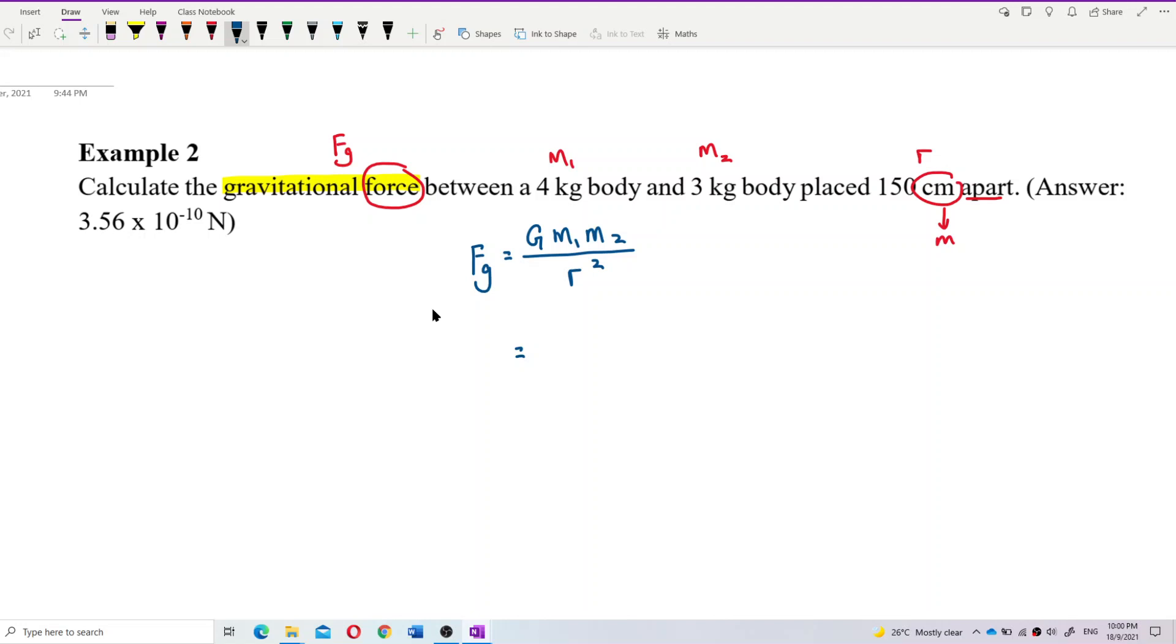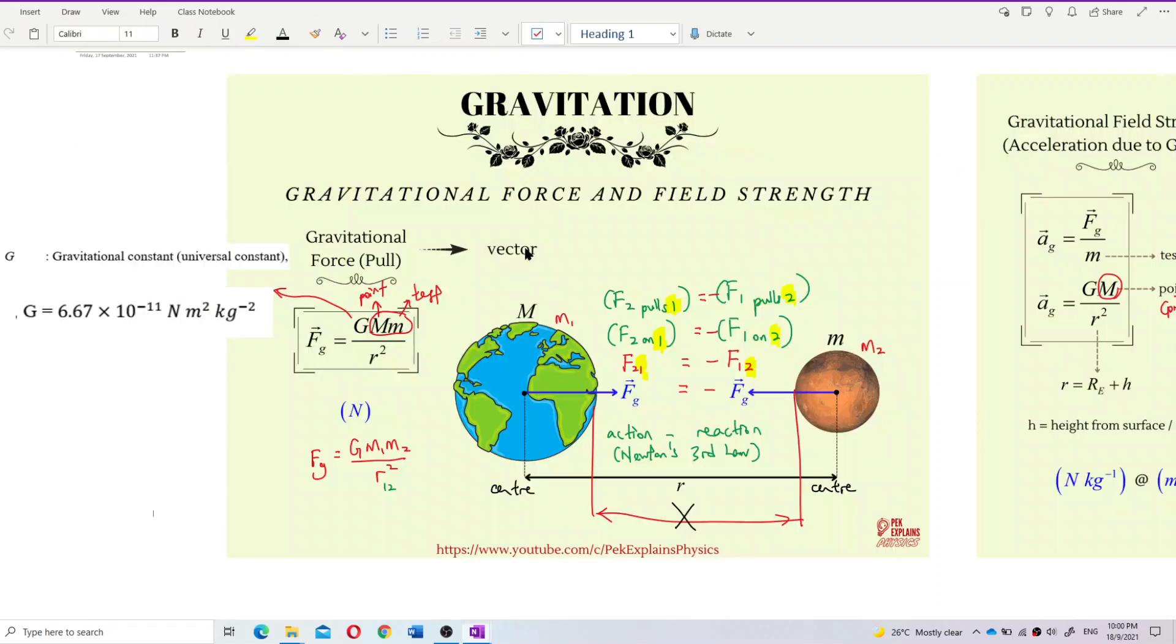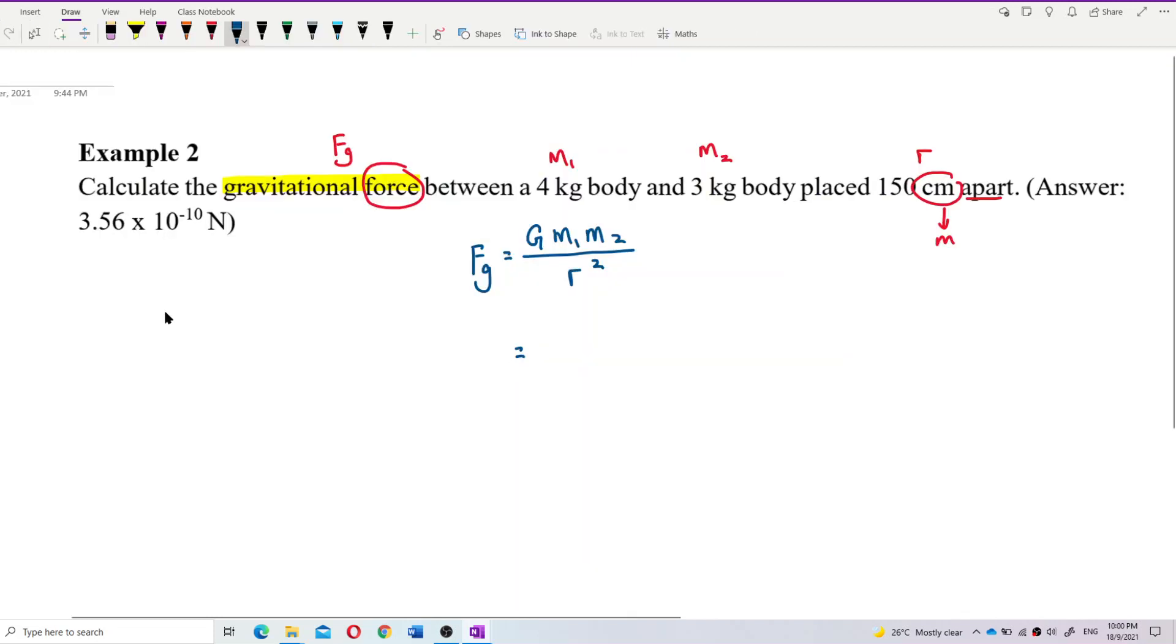G is the gravitational constant. It has a value of 6.67 exponent negative 11. So I'll write it down. So 6.67 exponent negative 11. Mass 1 is 4 kilogram SI unit. Good. And then mass 2 is 3 kilogram SI unit. Good.